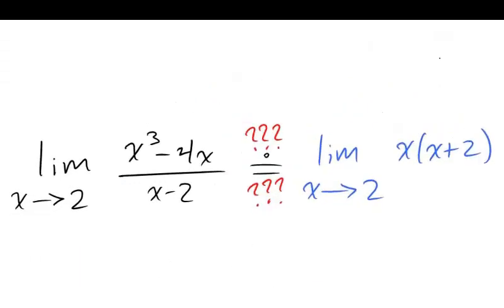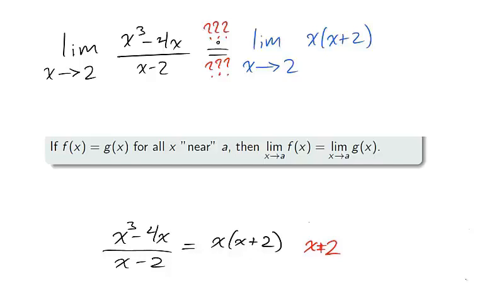The natural question to ask is, what is the connection between the limit of our rational function and the limit of the polynomial it equals everywhere but x equals 2? It turns out that they are equal. Notice that the rational function and polynomial are equal everywhere but 2, therefore their limits as x approaches 2 are equal.